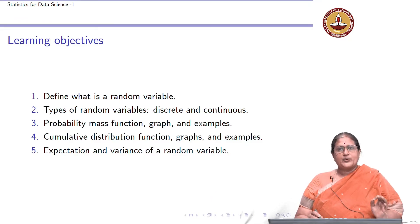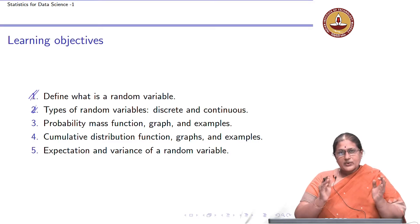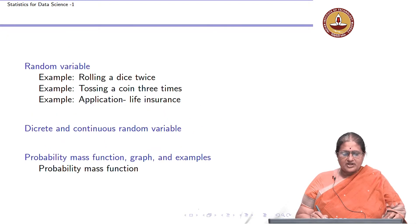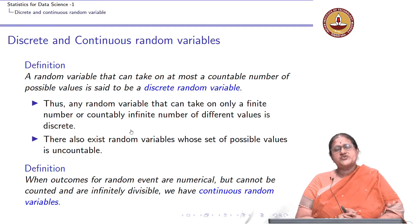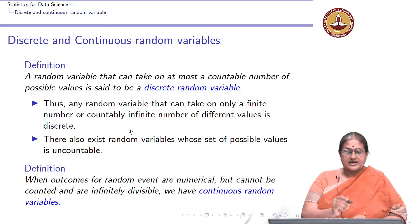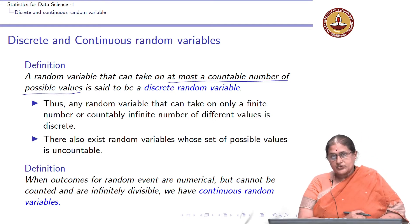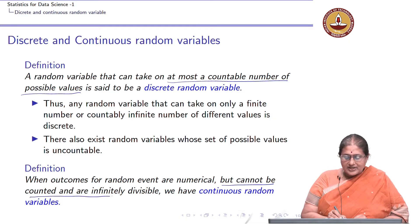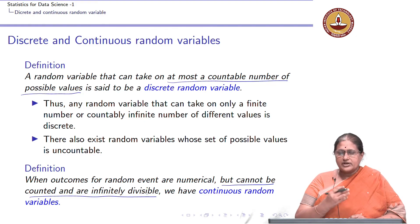In the last lecture, we defined what was a random variable, and towards the end of that lecture, we defined what was a discrete and continuous random variable. Now we are going to spend some time to understand more about discrete and continuous random variables through an example.